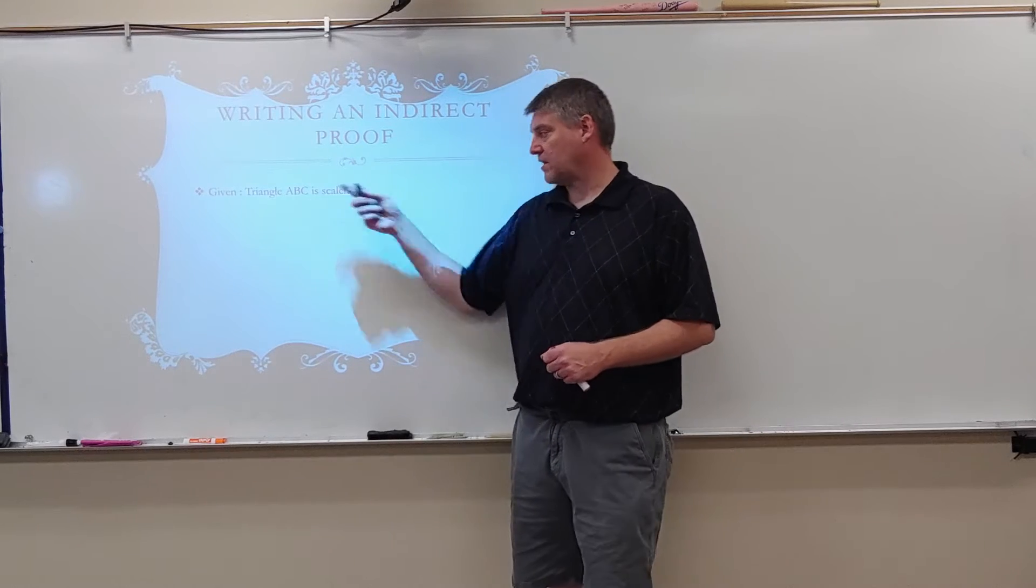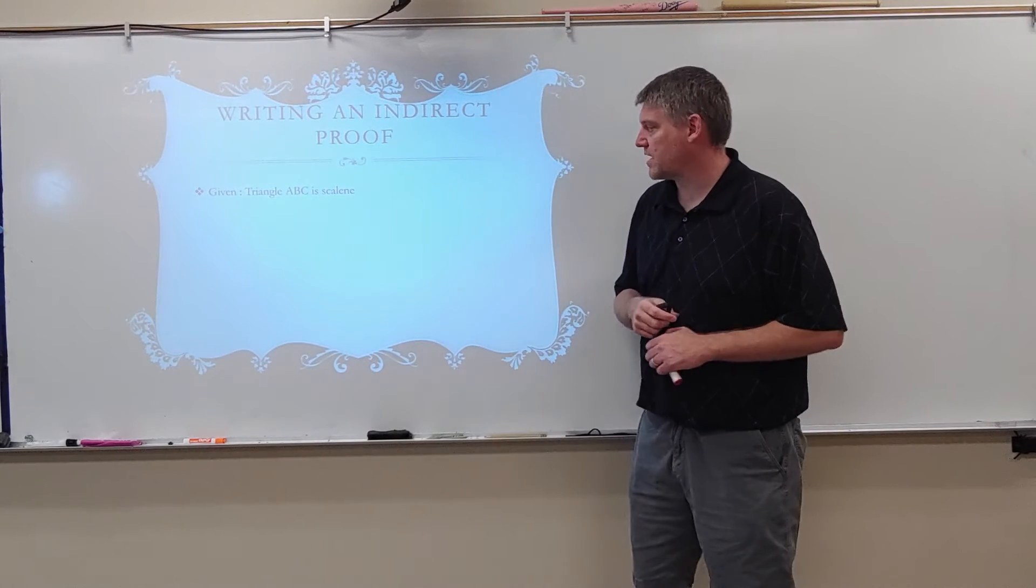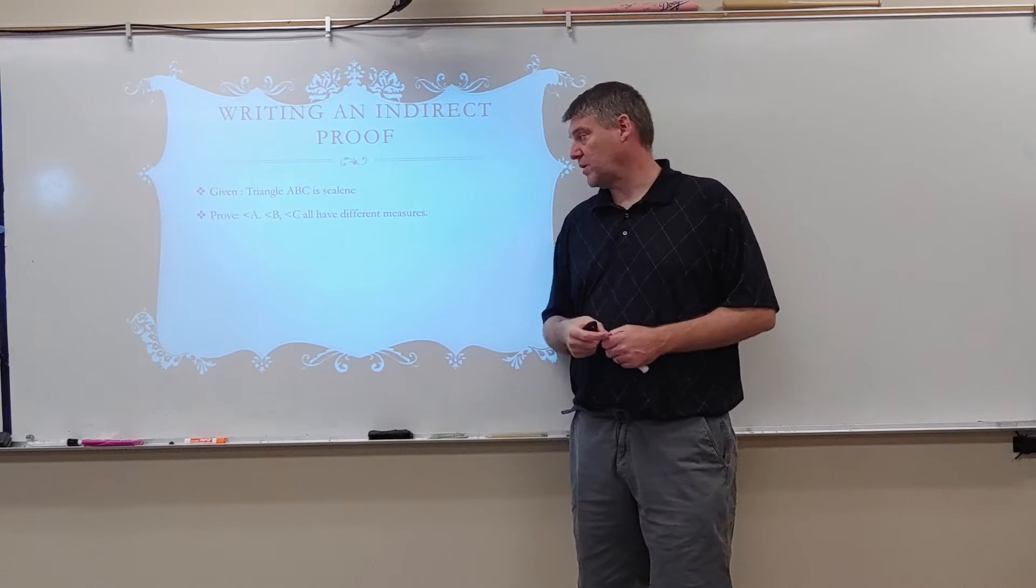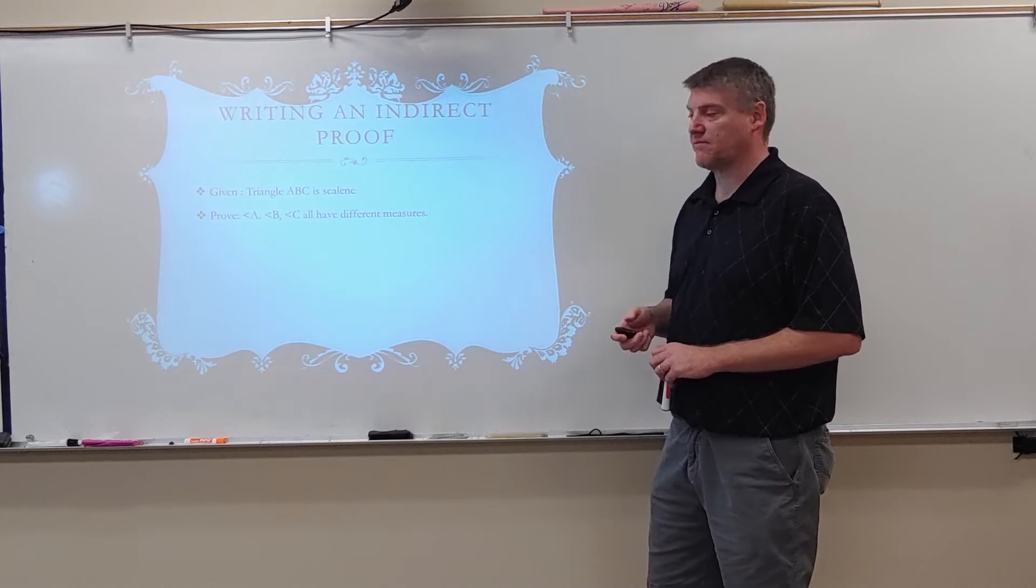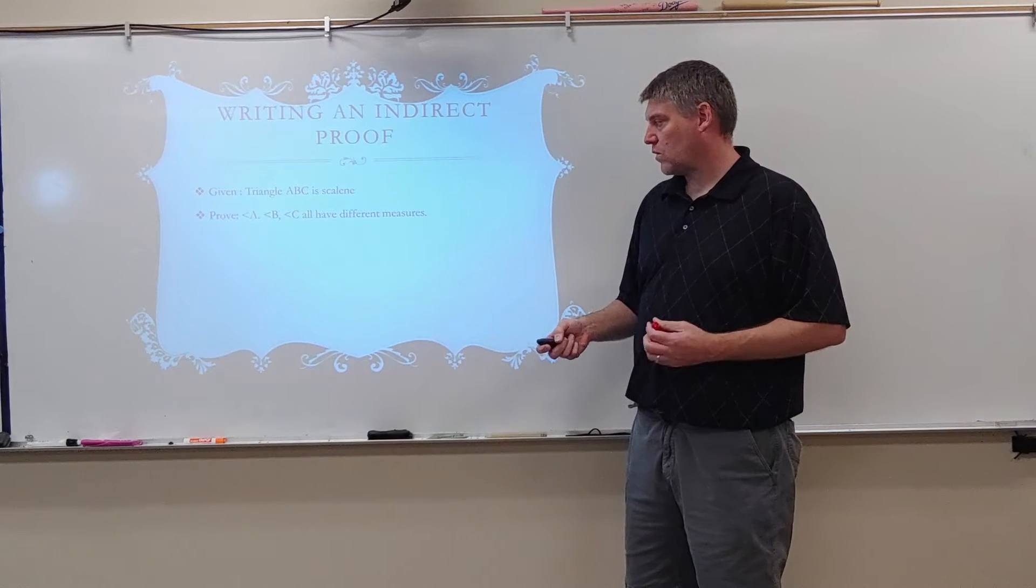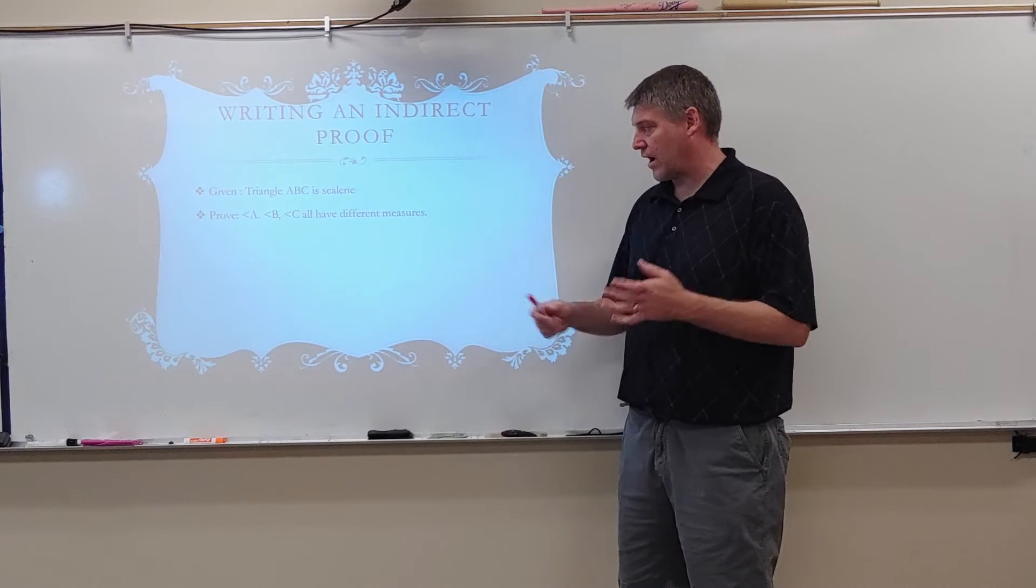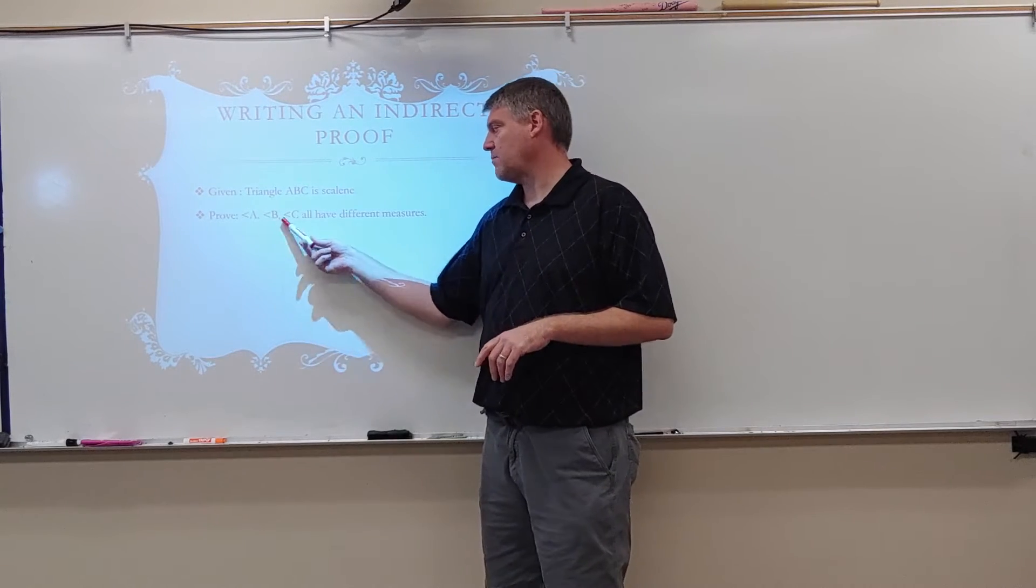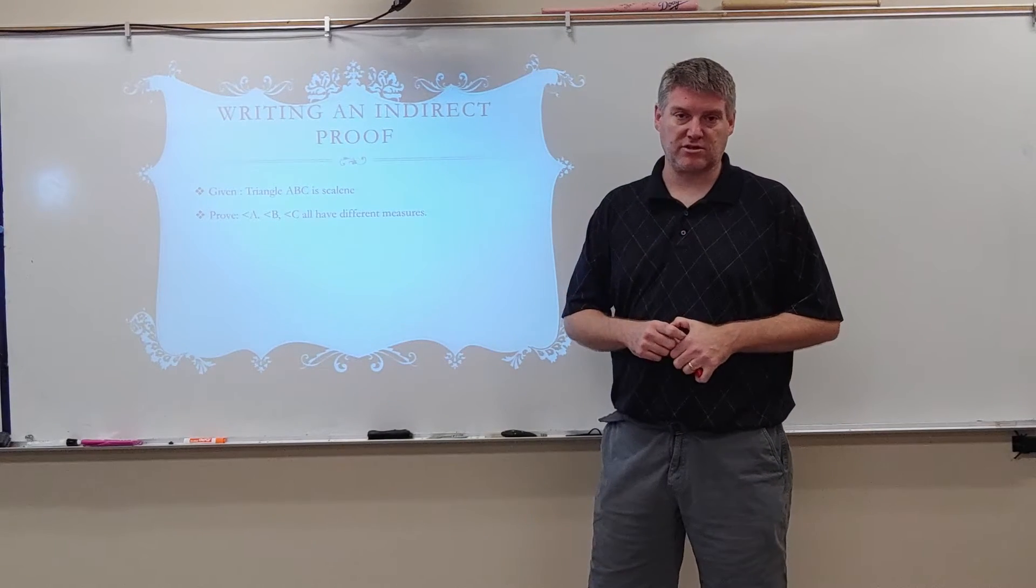Writing it. So, given triangle ABC is scalene, prove angle A, angle B, and angle C all have different measures. So what I'm going to do here now is I'm going to assume A, B, and C do not have different measures.